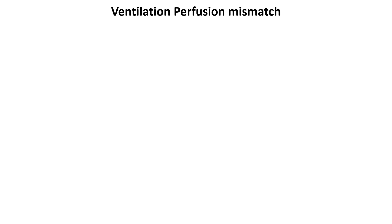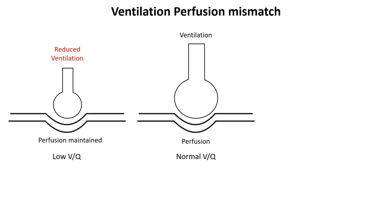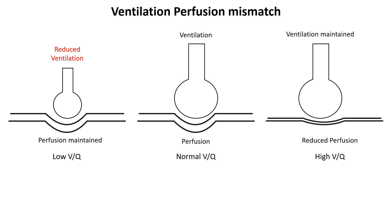Ventilation-perfusion, or V/Q, mismatch occurs when the balance between airflow (ventilation) and blood flow (perfusion) in the lungs is disrupted, impairing the efficiency of gas exchange between the alveoli and blood. When ventilation and perfusion are not well matched, some areas of the lung receive more blood than ventilation, resulting in a low V/Q mismatch, while others receive more ventilation than blood flow, leading to a high V/Q mismatch.